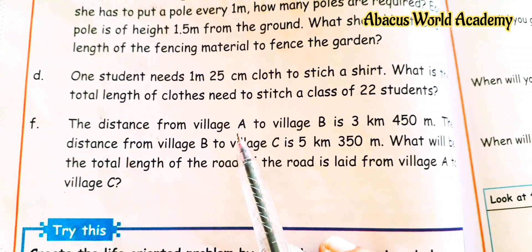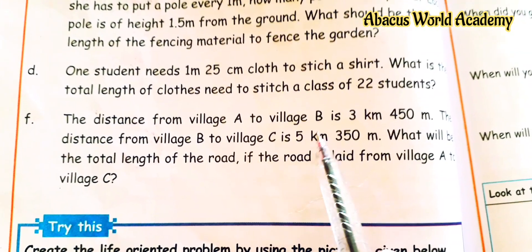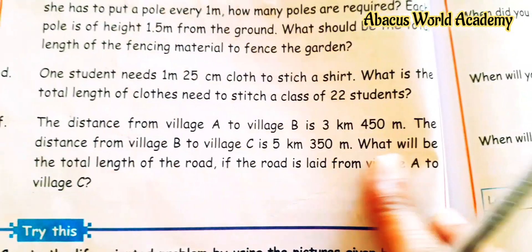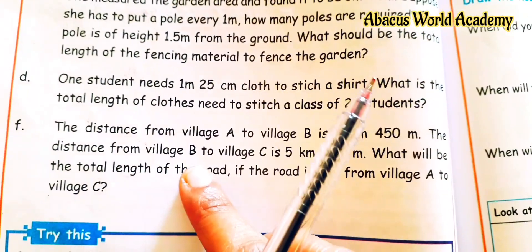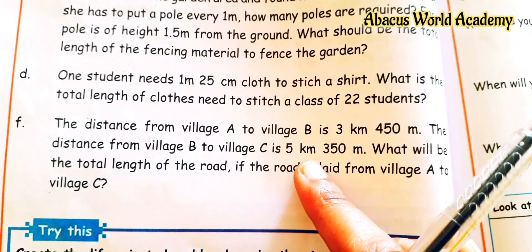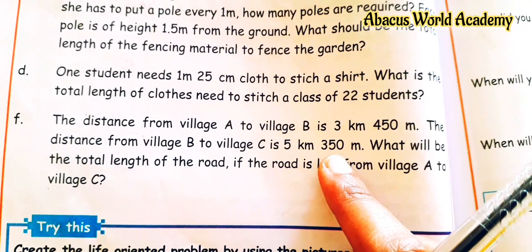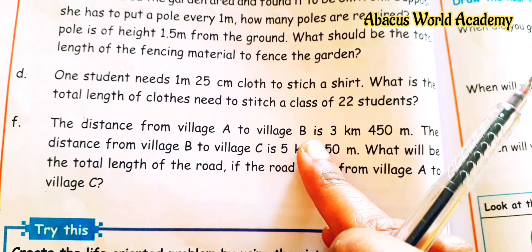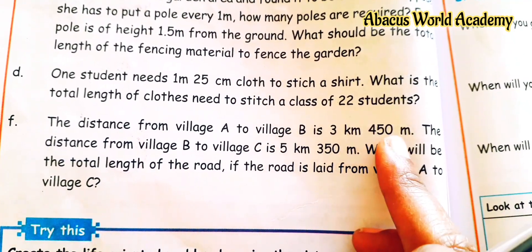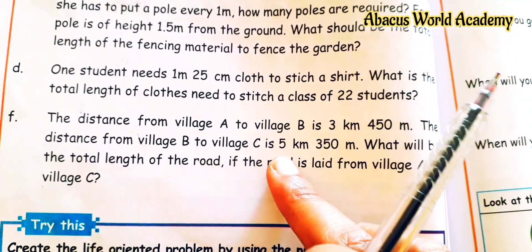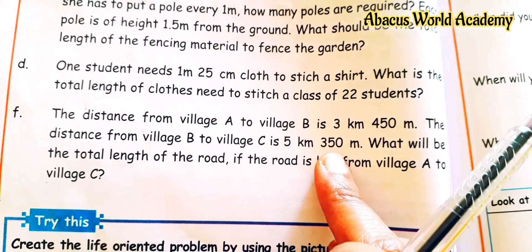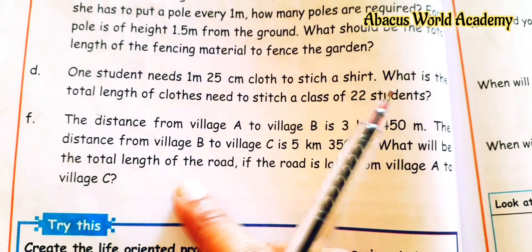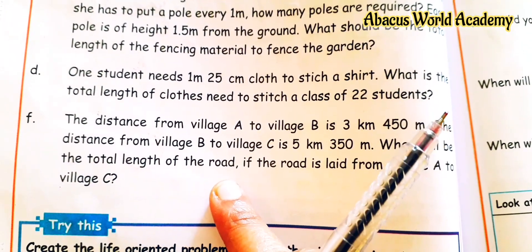The distance from village A to village B is 3 km 450 m. The distance from village B to village C is 5 km 350 m. What will be the total length of the road from A to C?